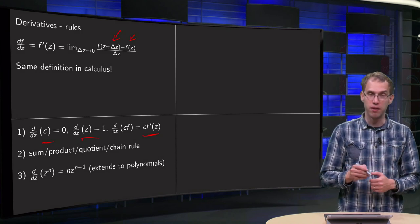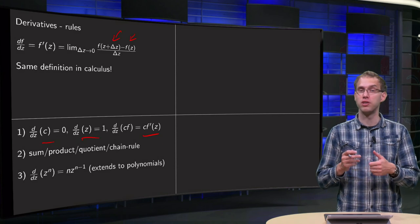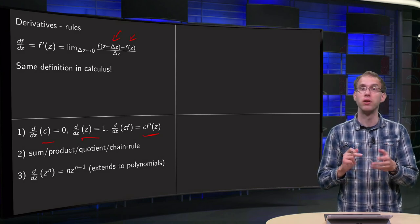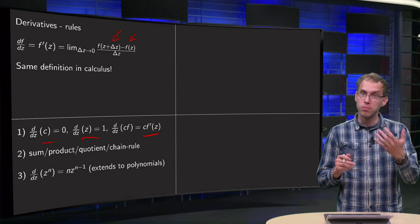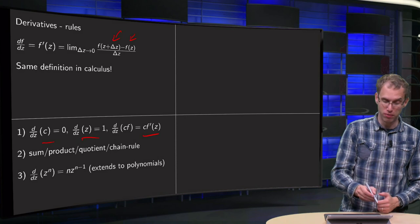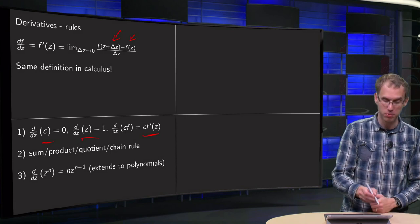Furthermore, we have the rules we know from calculus: sum rule, product rule, quotient rule, and chain rule. They all hold and you can prove them in the same way as you did in calculus. And that's nice because then you know, for example, that you can apply the product rule multiple times.